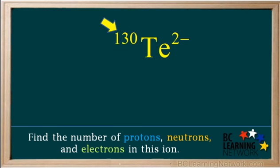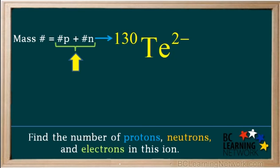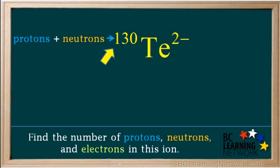First look at the number on the top left of the symbol. This is the mass number, which is the total number of protons plus neutrons. So the total number of protons plus neutrons in this ion is 130.